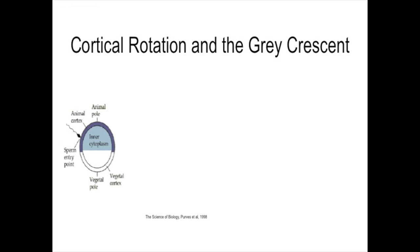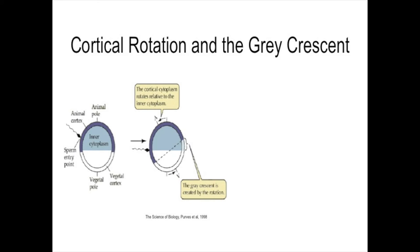Cortical rotation begins with sperm entry into the animal hemisphere of the Xenopus embryo, which causes the cortex, shown in dark blue, to loosen from the inner cytoplasm, allowing the cortex to move freely. Upon sperm entry, the cortex will move 30 degrees away from the sperm entry point, causing the movement of microtubules. The microtubules help move maternal dorsalizing factors. The area previously covered by the dark cortical cytoplasm in the animal hemisphere is now exposed and has a gray appearance — this is known as the gray crescent.